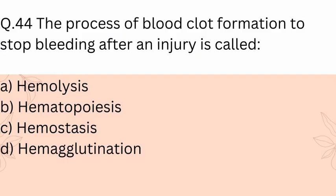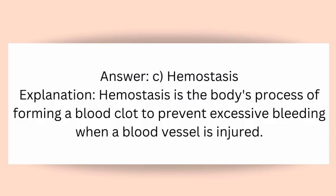Question 44: The process of blood clot formation to stop bleeding after an injury is called? A) Hemolysis, B) Hematopoiesis, C) Hemostasis, D) Hemagglutination. Answer: C) Hemostasis. Explanation: Hemostasis is the body's process of forming a blood clot to prevent excessive bleeding when a blood vessel is injured.